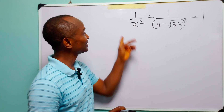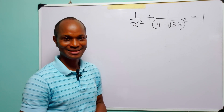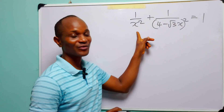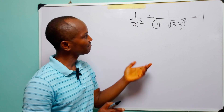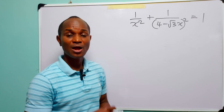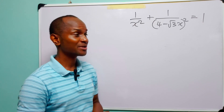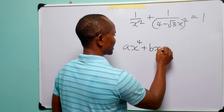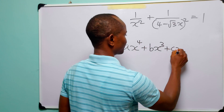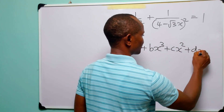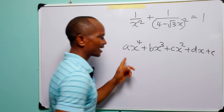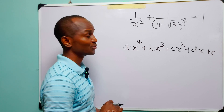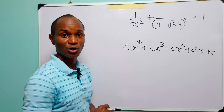Hello and welcome. In today's tutorial we have a math olympiad problem and I am sure you are going to find it very interesting. The task is to find all the values of x that satisfy this equation. There are several ways of doing this but most of them involve having to solve polynomials like x to the power four, x to the power three, which can be very tedious. In this tutorial I am going to show you a much simpler way of solving this equation completely.